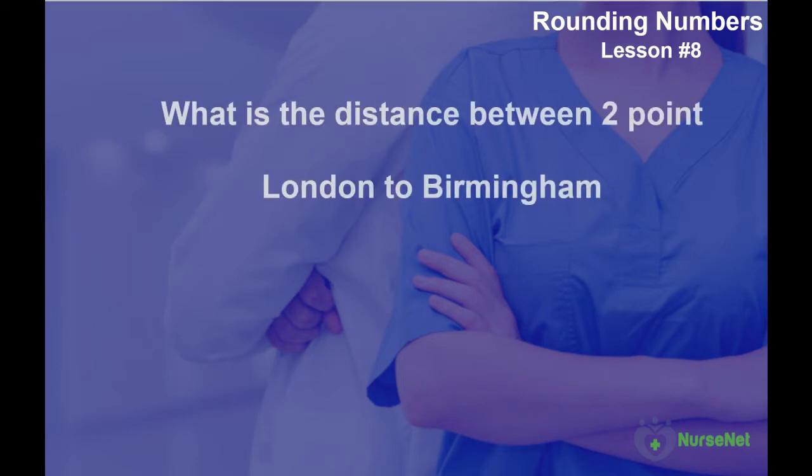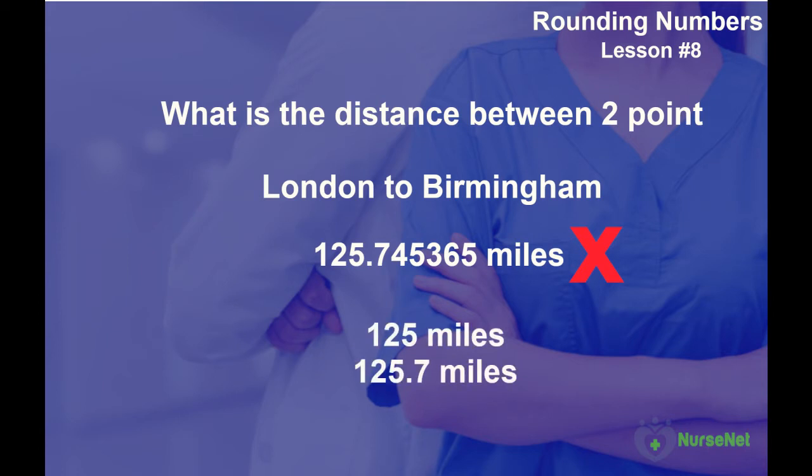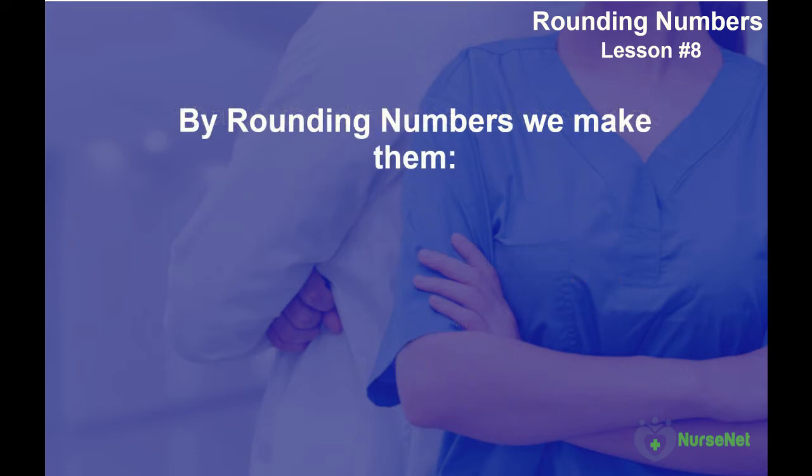If you were asked the question, what is the distance between two locations, let's say London and Birmingham, it's unlikely that you'd say it's 125.745365 miles, which is the accurate distance. You're more likely to say it's 125 miles, or even it's 125.7 miles. By rounding to the nearest whole number or decimal place, we've made much more sense of the question. We've made the number more manageable and practical.